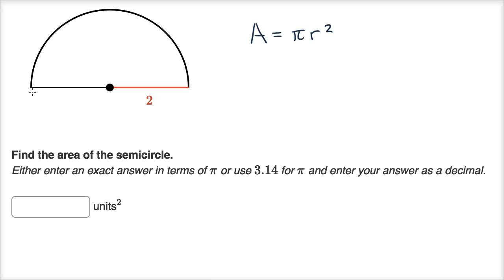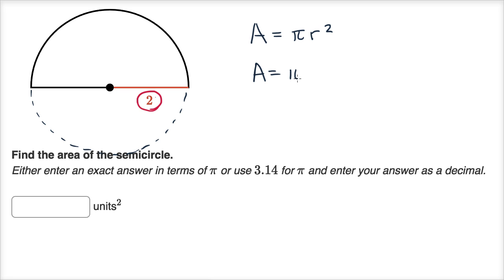If we think about the entire circle, what is the area going to be? Well, they tell us what our radius is — our radius is equal to two. So the area, if we're talking about the whole circle, it would be equal to pi times two squared.